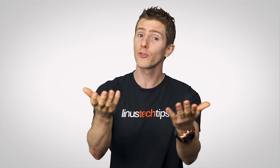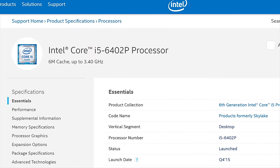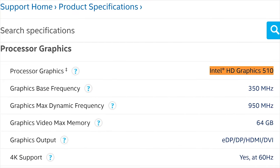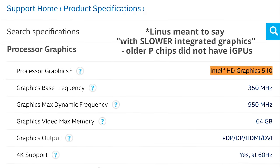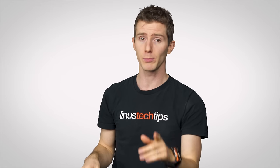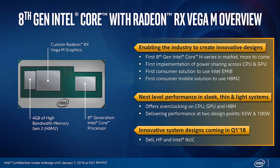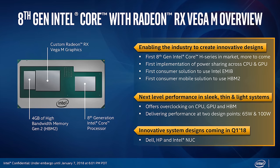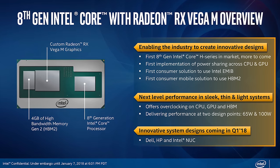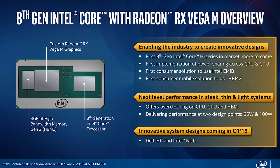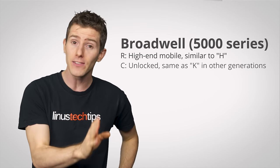Other letters can indicate some interesting graphics options. If you see a chip with a P on the end, this indicates a desktop processor without integrated graphics, which can save you a few bucks if you're planning to use a discrete video card anyway. The newer G CPUs feature Radeon RX Vega graphics built in from Intel's biggest rival AMD — or as Intel might prefer, their total non-competitor Radeon Technologies Group, which is a totally different company.